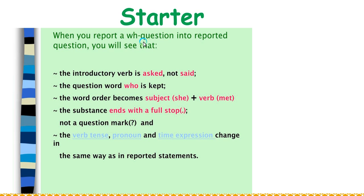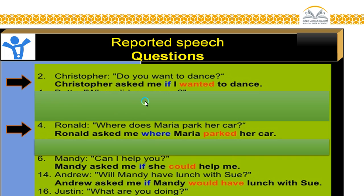When you report a WH question into a reported question, there are things to observe. When we have a WH question, we just take the question word itself and keep it the same. But if we don't have a WH question — like a question where the answer is yes or no — we just have to add 'if.' For example, 'Do you want to dance?' — you answer yes or no.